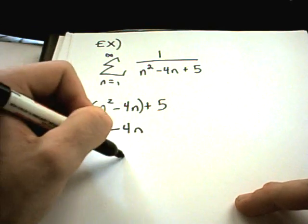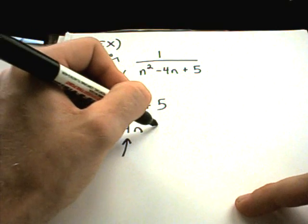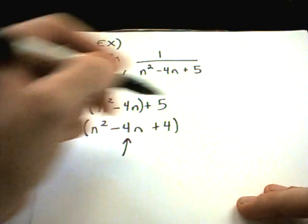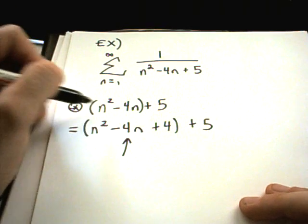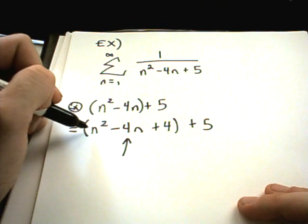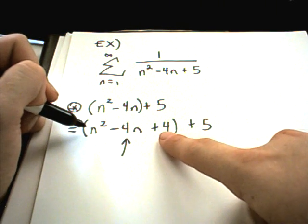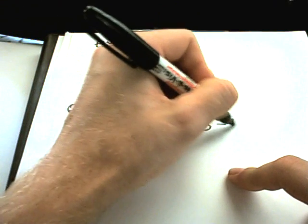And then, remember, you take half of the middle term, which is negative 2, and you square it. So I'll get positive 4, and that's what I throw inside this problem. Now, I have to be careful right now, because if I just write this as equal to this, clearly this is not correct. Because if I multiply it out, I'm going to get an extra plus 4. Well, to compensate for that, I will subtract 4 away.